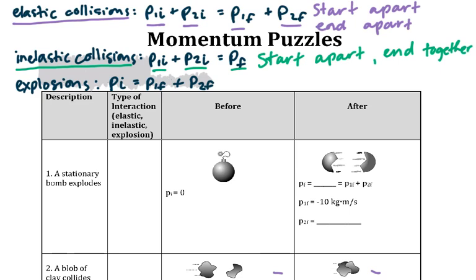The last interaction is called an explosion. In an explosion they start together, and then end apart.